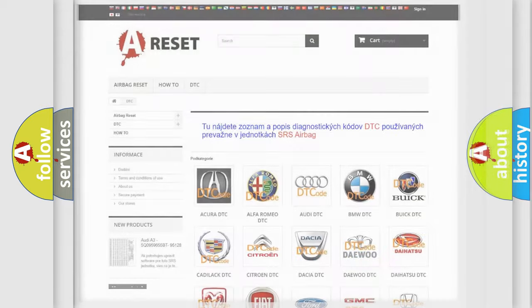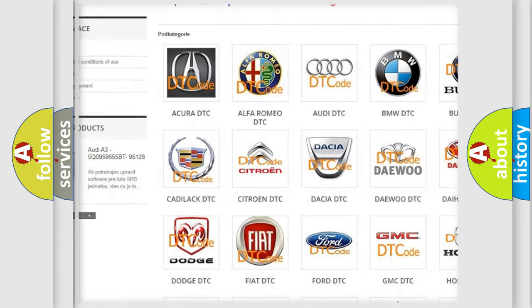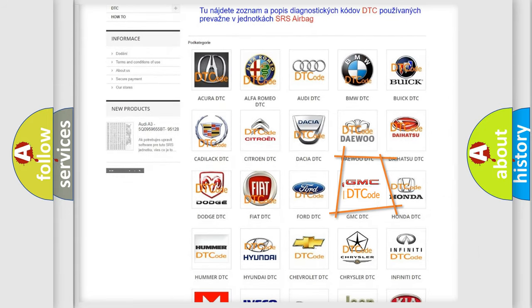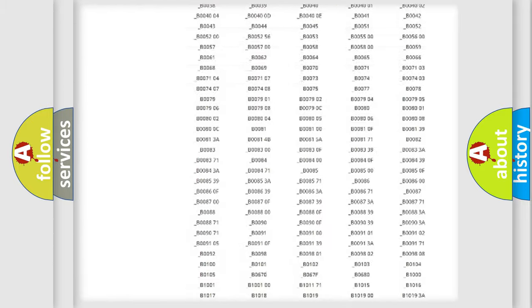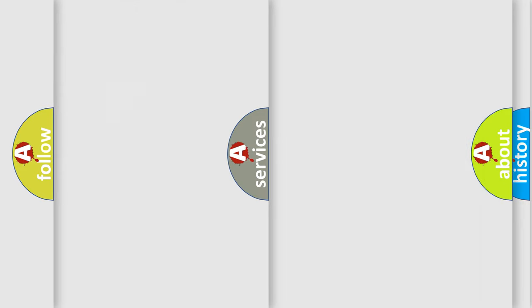Our website airbagreset.sk produces useful videos for you. You do not have to go through the OBD2 protocol anymore to know how to troubleshoot any car breakdown. You will find all the diagnostic codes that can be diagnosed in GMC vehicles and many other useful things.